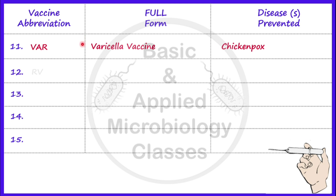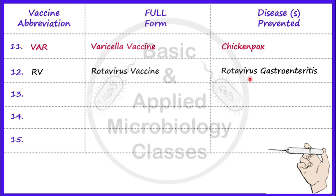Now let's take the next vaccine, that is RV. RV stands for Rotavirus vaccine, and it is used to prevent rotavirus gastroenteritis. Just like the polio vaccine, this rotavirus vaccine is also given by oral route — it is similar to OPV.